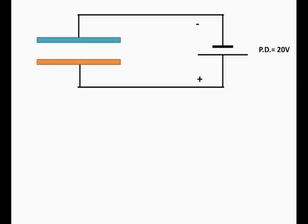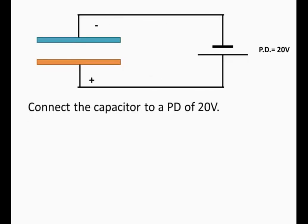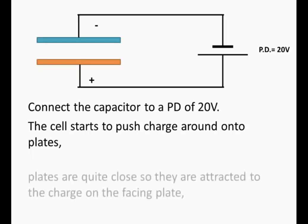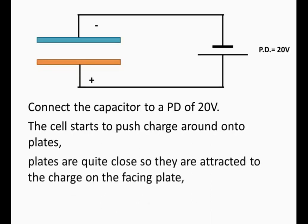Here we have the capacitor which we're about to charge. We apply the voltage and the charge moves onto the plates. Let's say we connect it with 20 volts. The battery starts to push the charge around onto the plates. Since the plates are quite close to each other, the charge is attracted to the charge on the facing plate.